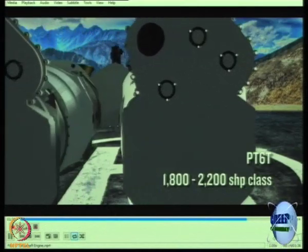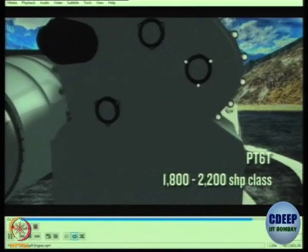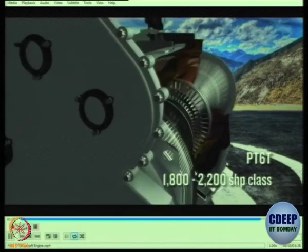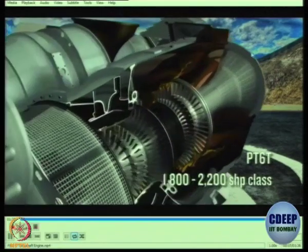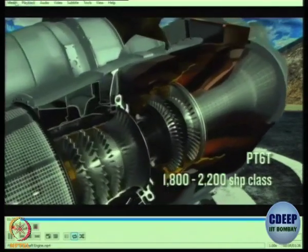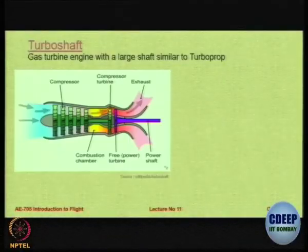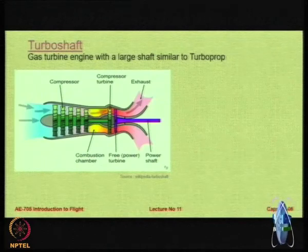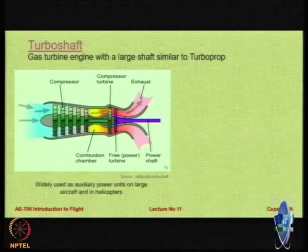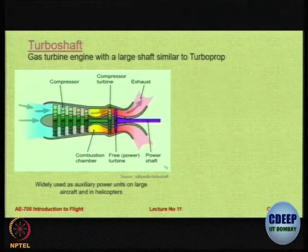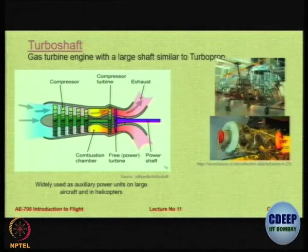The power is still given to the shaft but the shaft is turned 90 degrees and used to connect it to a rotor. The exhaust here does not give any thrust — it is just to throw the air out. This engine is very common for APUs, the auxiliary power units, and for helicopters.